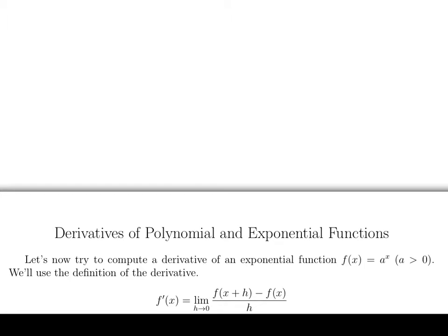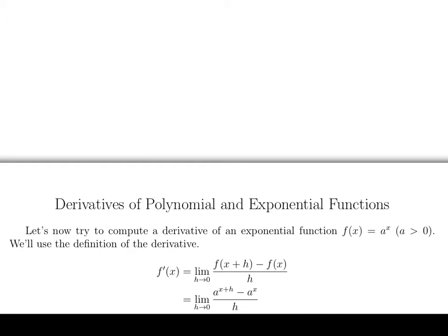So as usual, we'll use the definition of the derivative, so f prime of x is equal to the limit as h goes to zero of f of x plus h minus f of x all over h. It's the same definition we've been using a lot. We're going to plug things into the exponential function. So now we get limit as h goes to zero of a to the x plus h minus a to the x all over h.